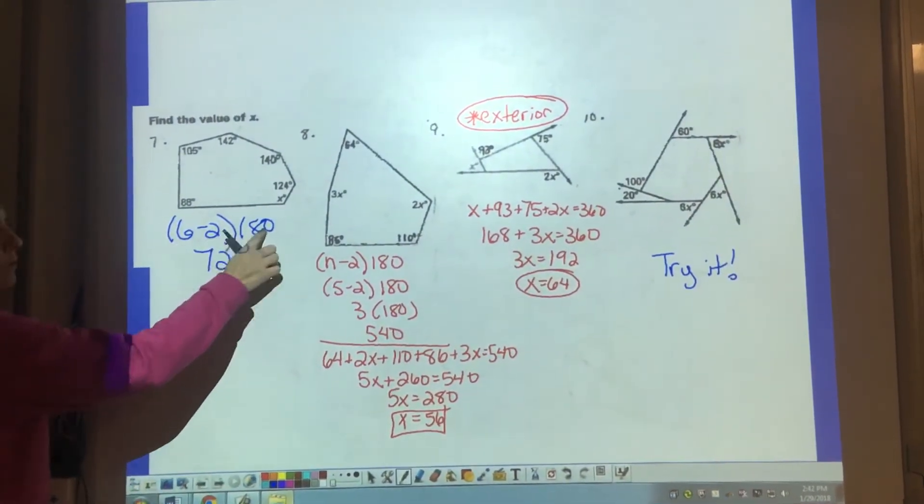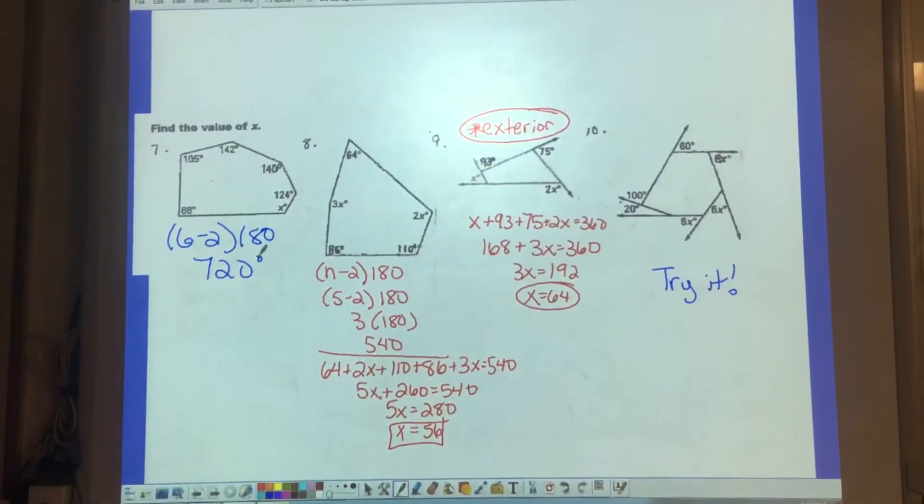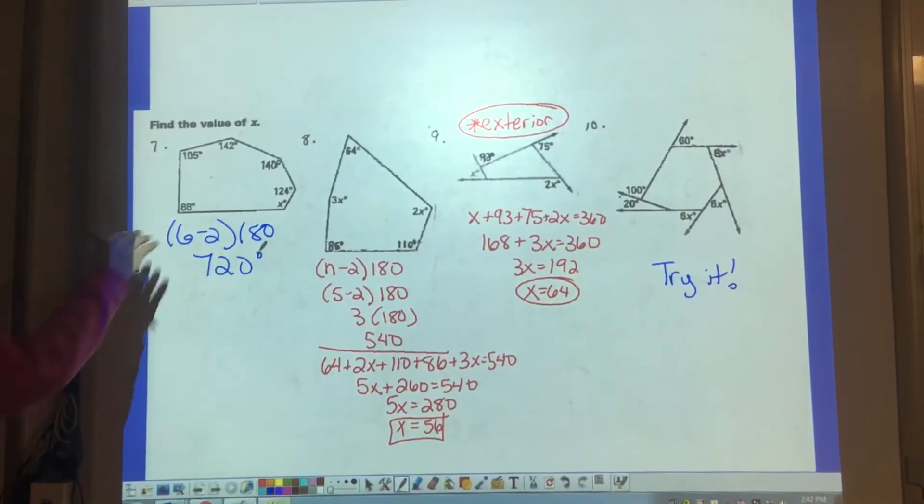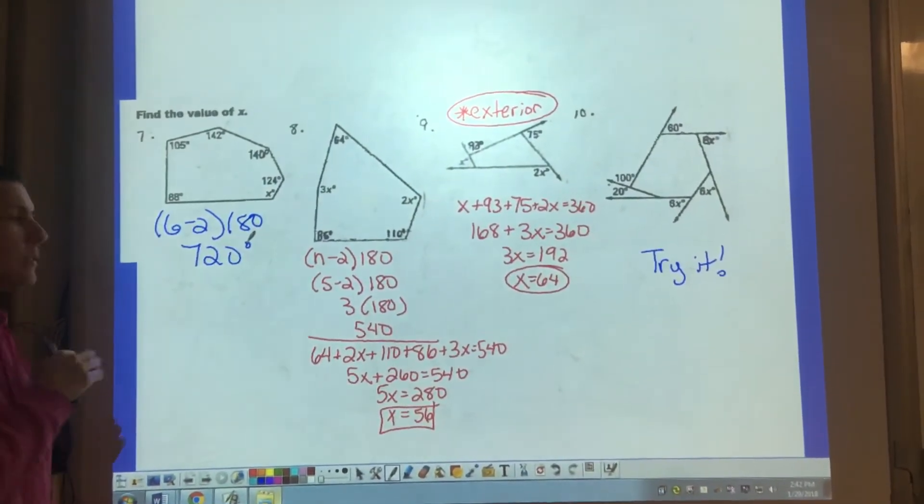Six minus two is four. Four times 180 is 720 degrees. So we know that when we add all of these angles up, it has to add up to 720.